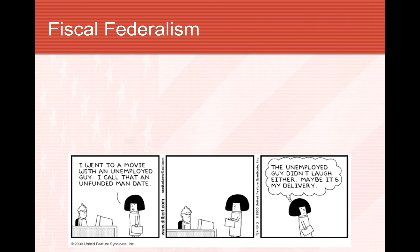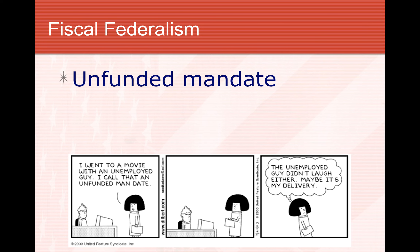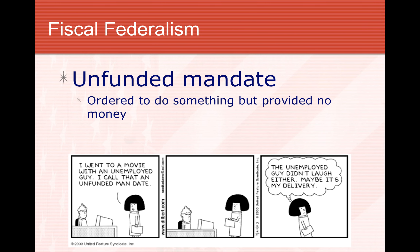The last important concept in fiscal federalism is the unfunded mandate. A mandate is basically an order, so an unfunded mandate is an unfunded order — the federal government doesn't provide any money for it. It's something that costs a bunch of money, but states have to use block grants or tax dollars to cover it. States, local governments, or businesses are required to follow these orders without receiving any federal funding.